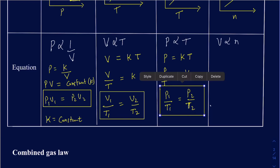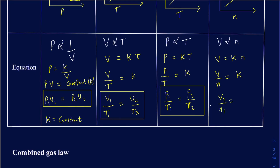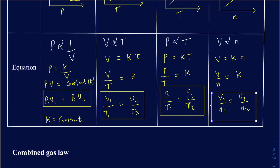Finally, for Avogadro's Law, volume equals some constant times moles. So the ratio of volume over moles is always constant for a particular gas, as long as temperature and pressure are constant. Therefore V₁/N₁ equals V₂/N₂. That's your fourth law equation.